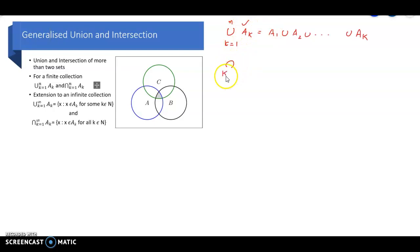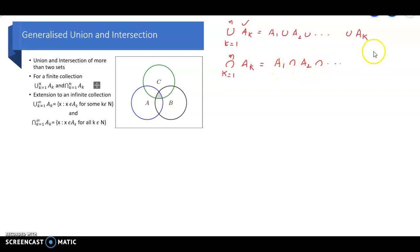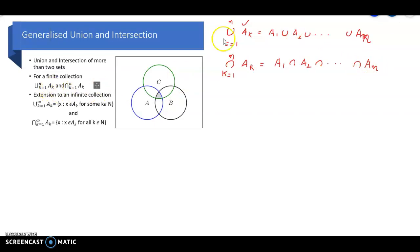The symbol union k equal to 1 to N of A-sub-k is used for saving space and using mathematical notation. Similarly, intersection k equal to 1 to N of A-sub-k denotes the intersection of all the sets — the points common to A1, A2, ..., A-sub-N. This is the meaning of these two symbols.